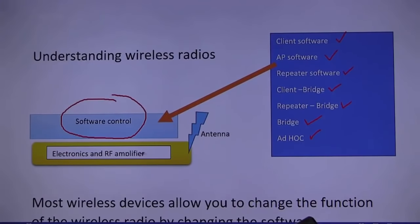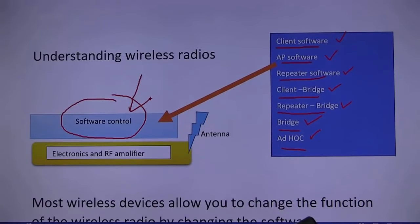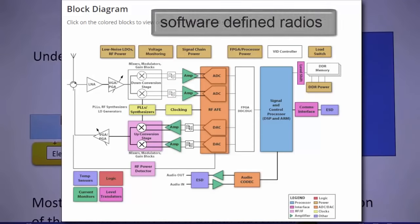The software that runs your radio and RF amplifier and your antenna is what can turn it into a client, an access point, a repeater, a client bridge, a repeater bridge, a bridge, or ad hoc by simply changing the software. And that's exactly what we're doing today. I'm going to quickly go through all of these modes. Years ago when wireless first came out, when you bought an access point it was an access point forever. But today that's all changed. Now you can download software to run your radio and antenna and you can be any one of these at any time.